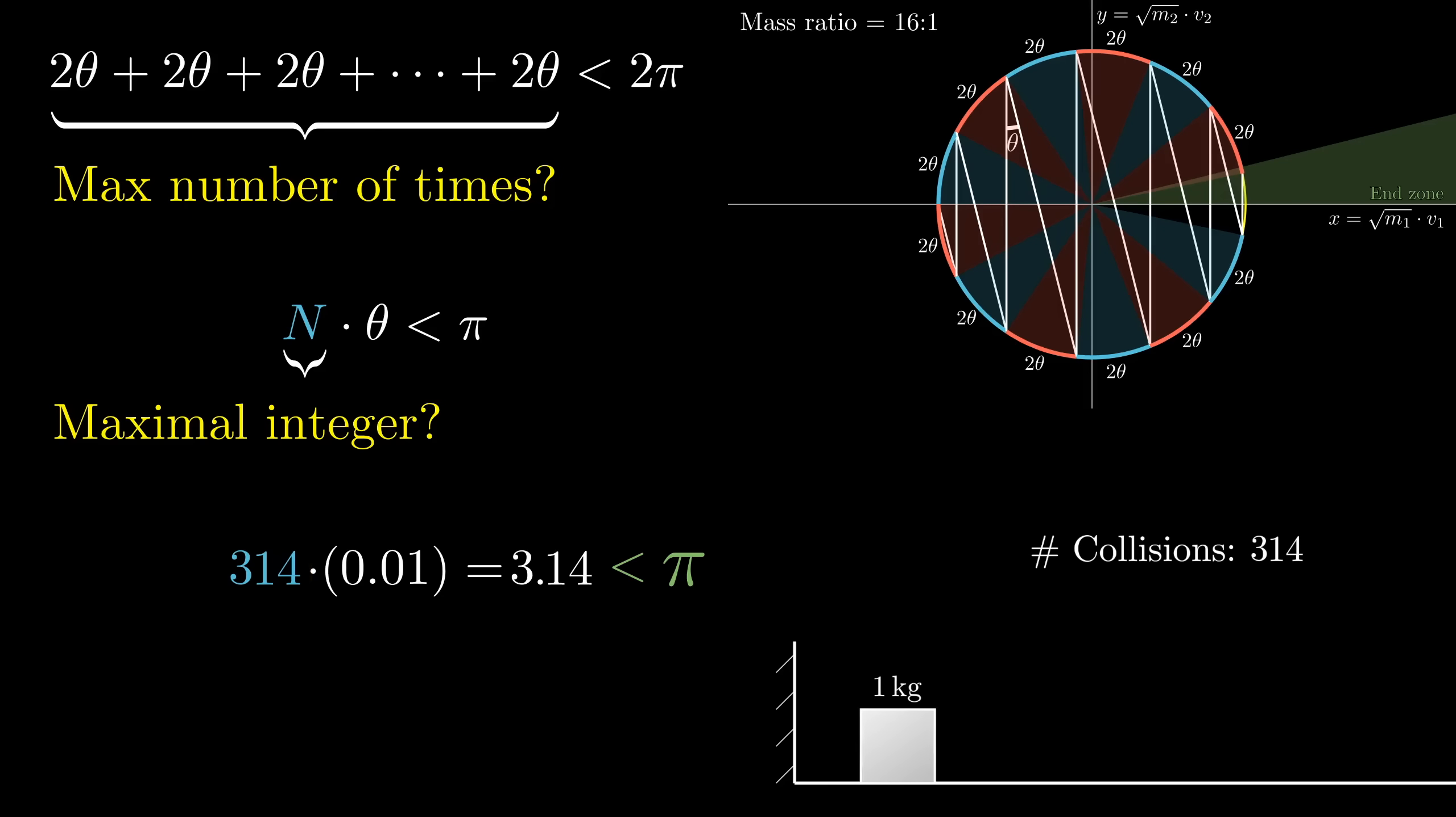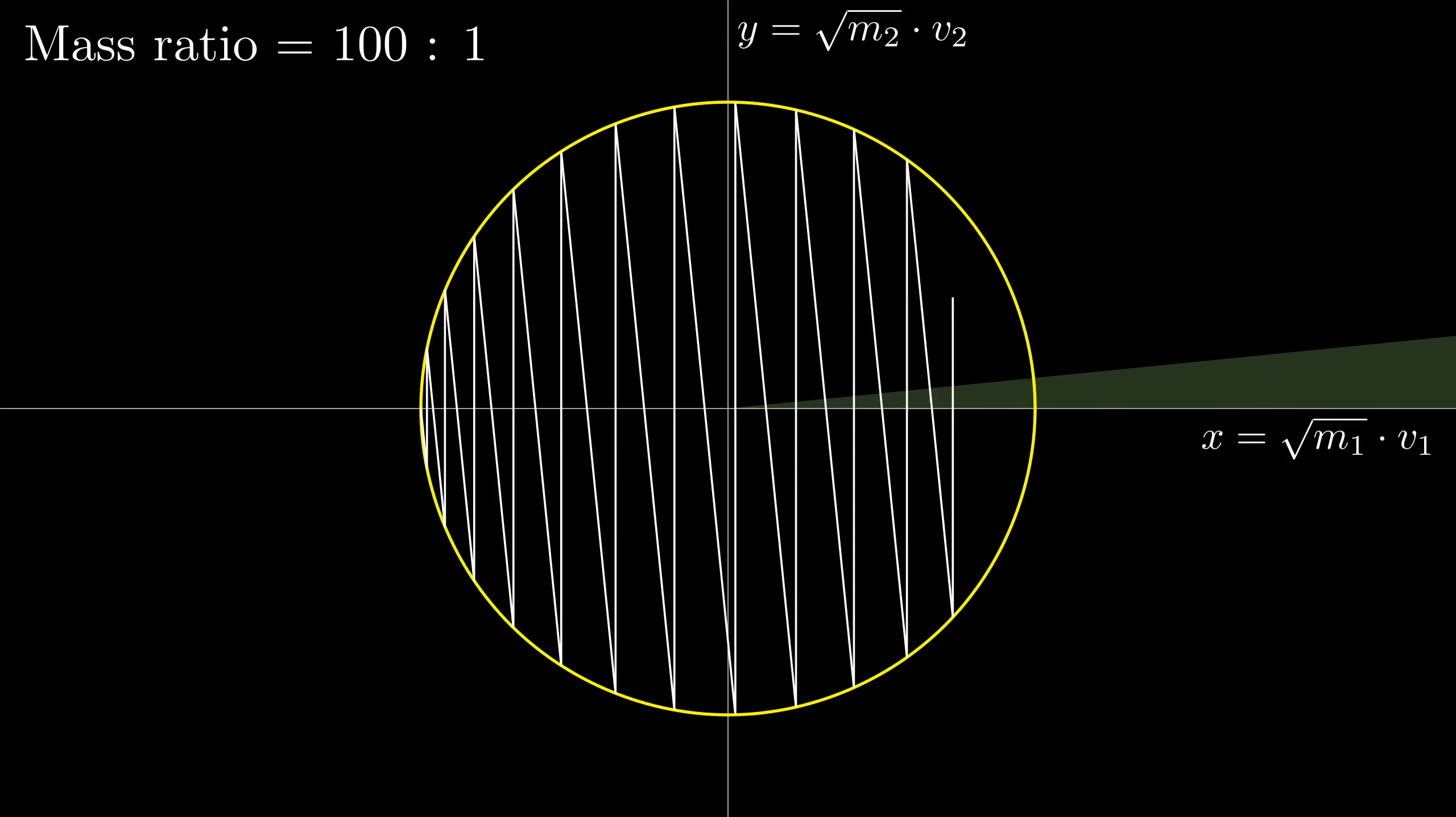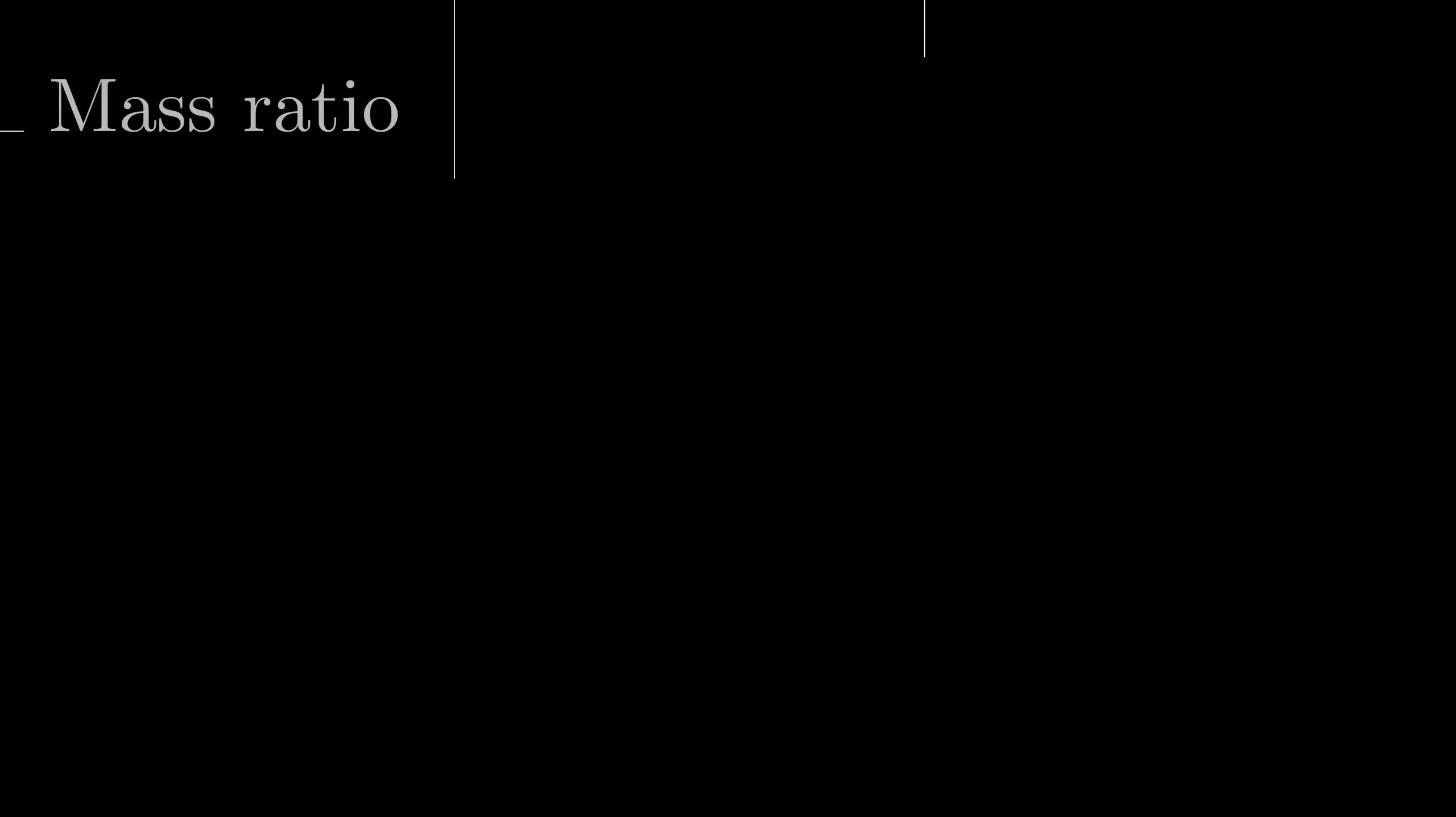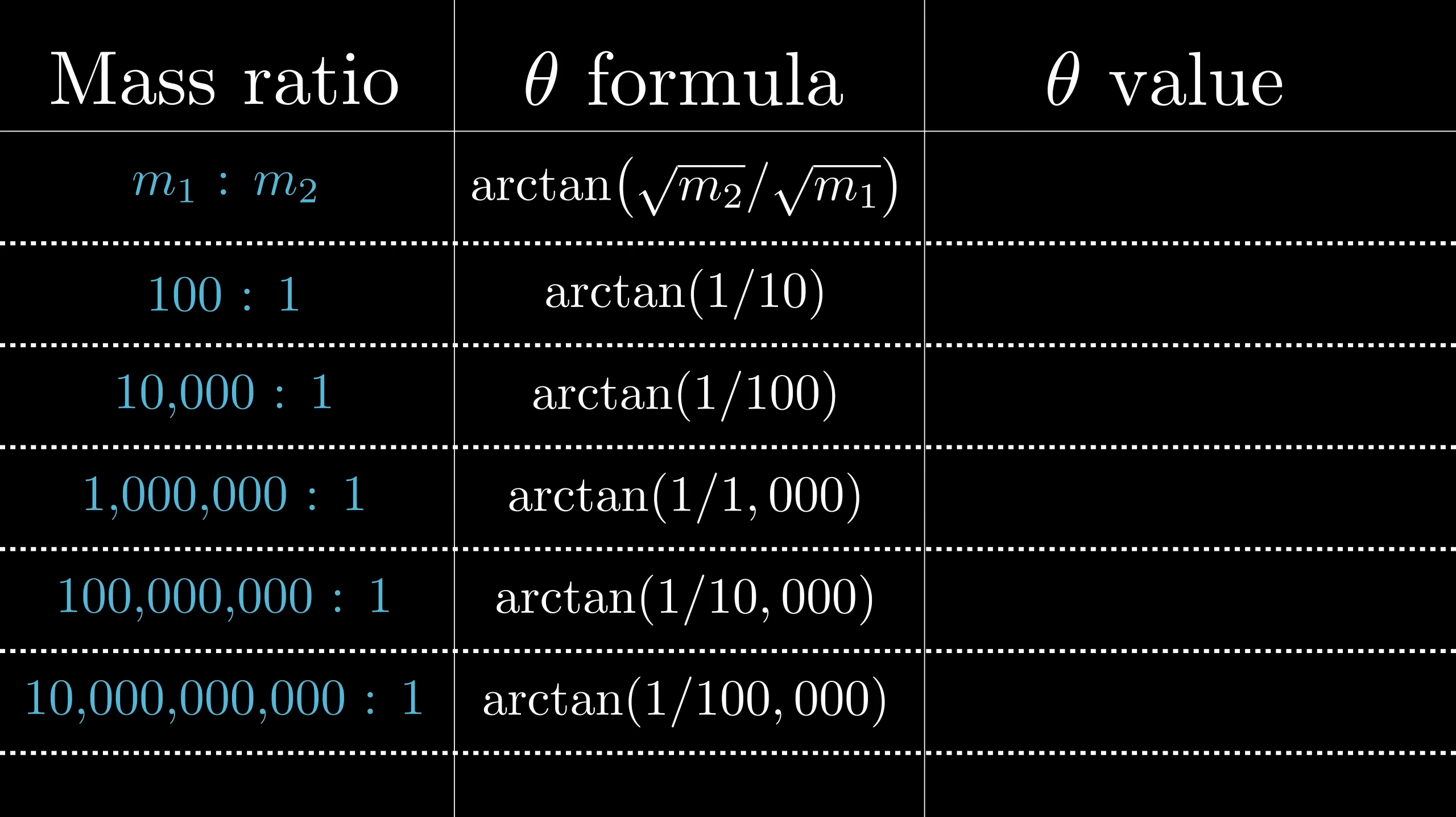So now you know what we need to do. Let's go ahead and actually compute the value theta, say when the mass ratio is 100 to 1. Remember, this rise over run slope of that constant momentum line was the negative square root of m1 over m2, which in this example is negative 10. That would mean that the tangent of this angle theta, opposite over adjacent, is the run over the negative rise, so to speak, which is 1 divided by 10 in this example. So theta is going to be the arc tan of 1 tenth. Speaking more generally, it'll be the inverse tangent of the square root of the small mass over the square root of the big mass.